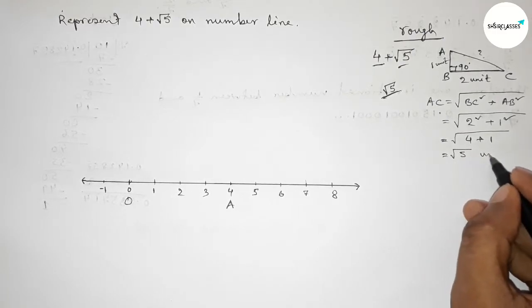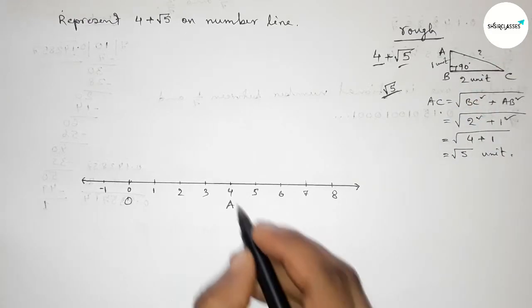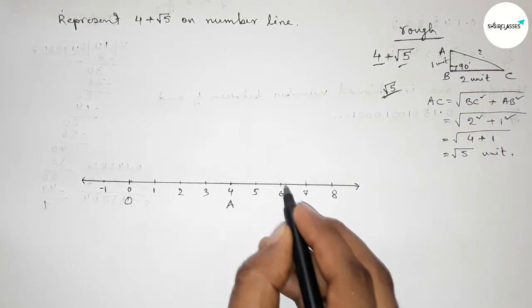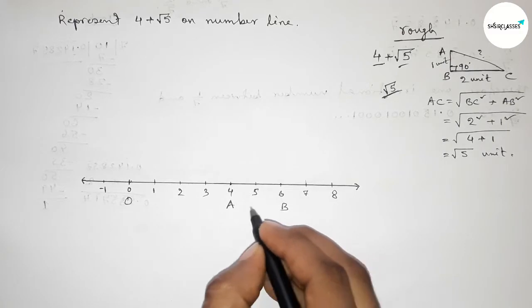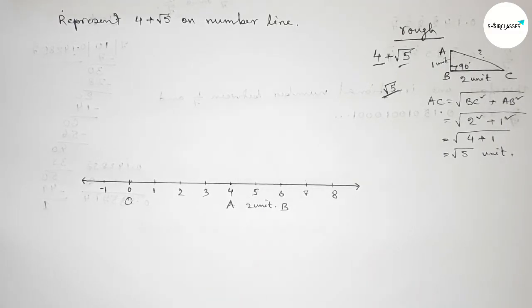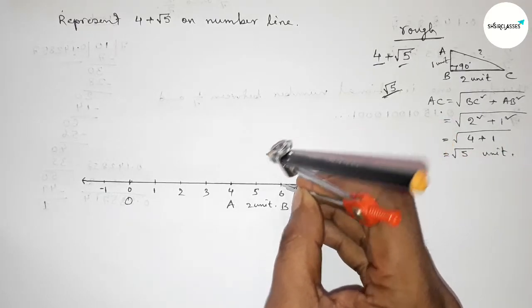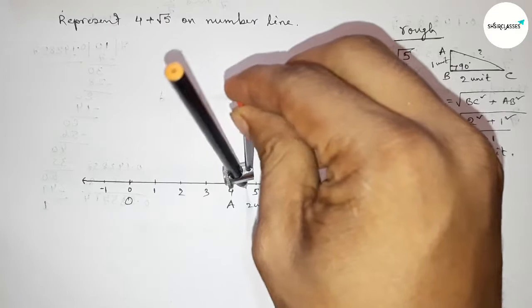So applying this concept from four to six, between four to six this is 2 unit length and taking point B on the point six. Now constructing a 90 degree angle on the point B.